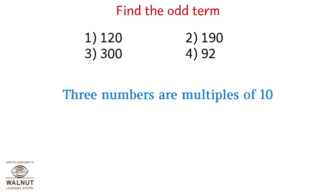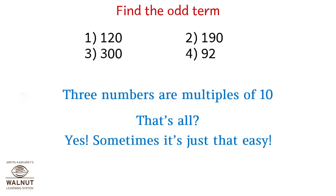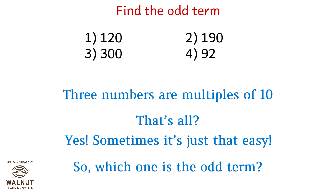Find the odd term. Three numbers are multiples of 10. That's all? Yes! Sometimes it's just that easy. So which one is the odd term? Option 4: 92.